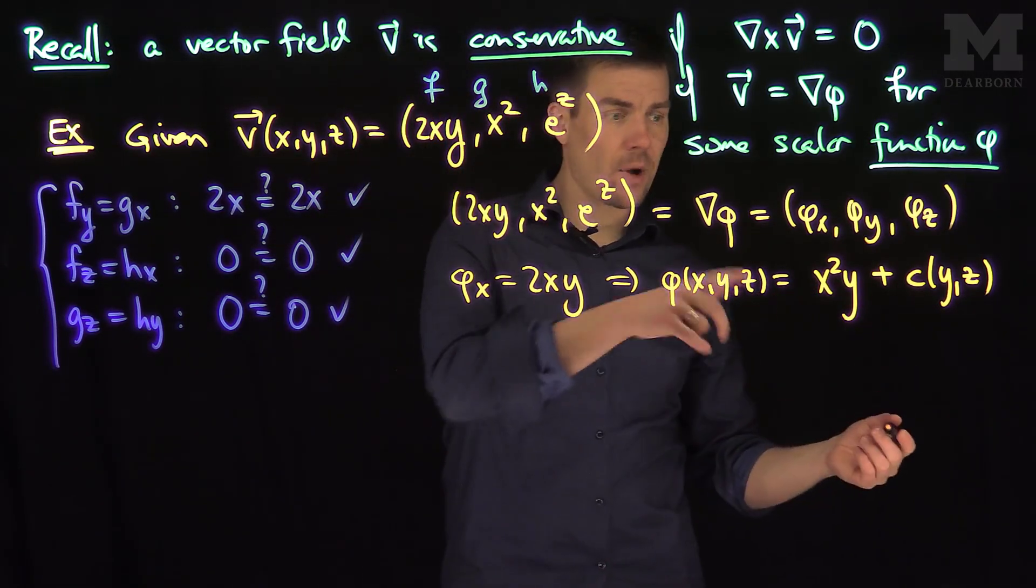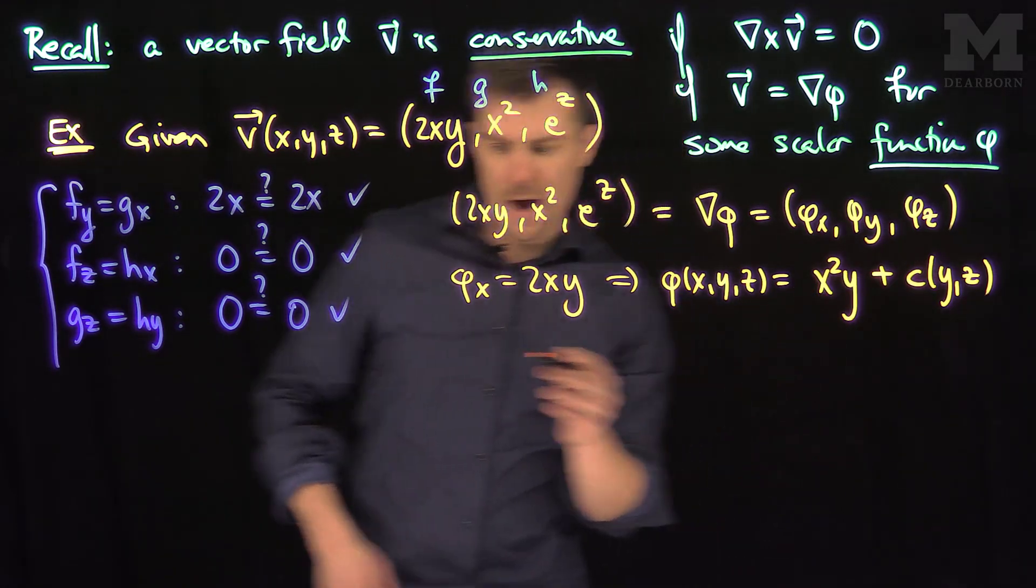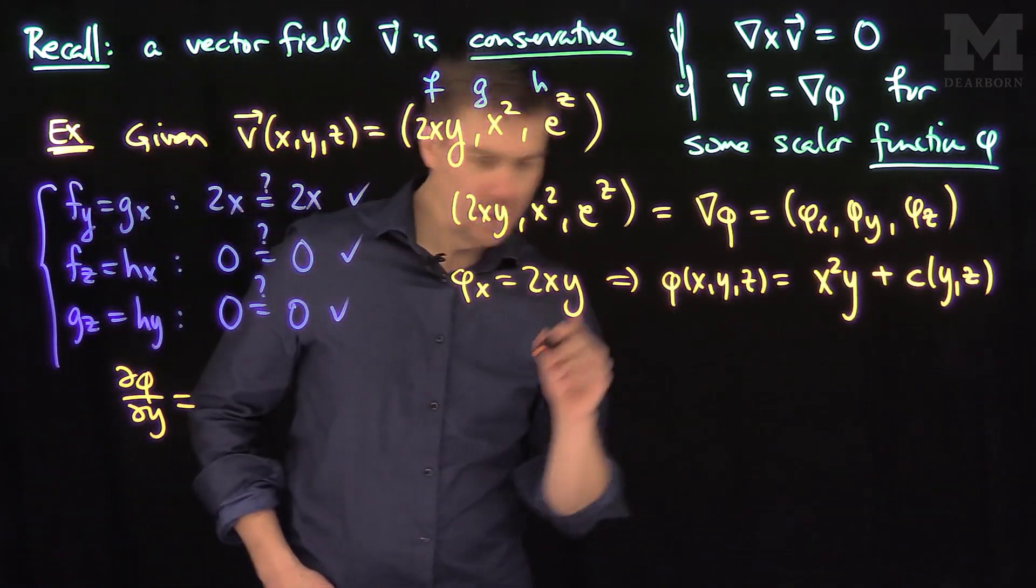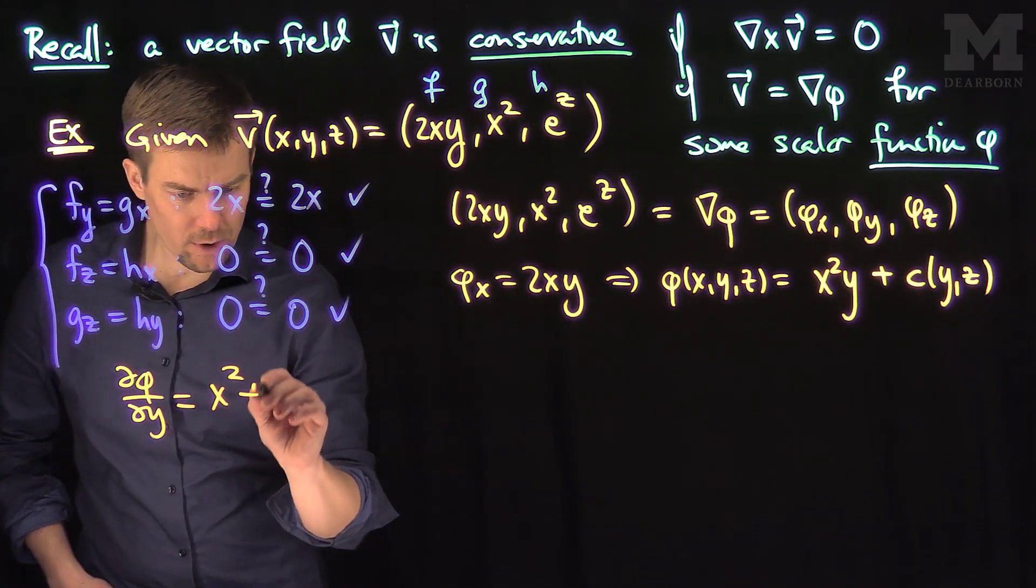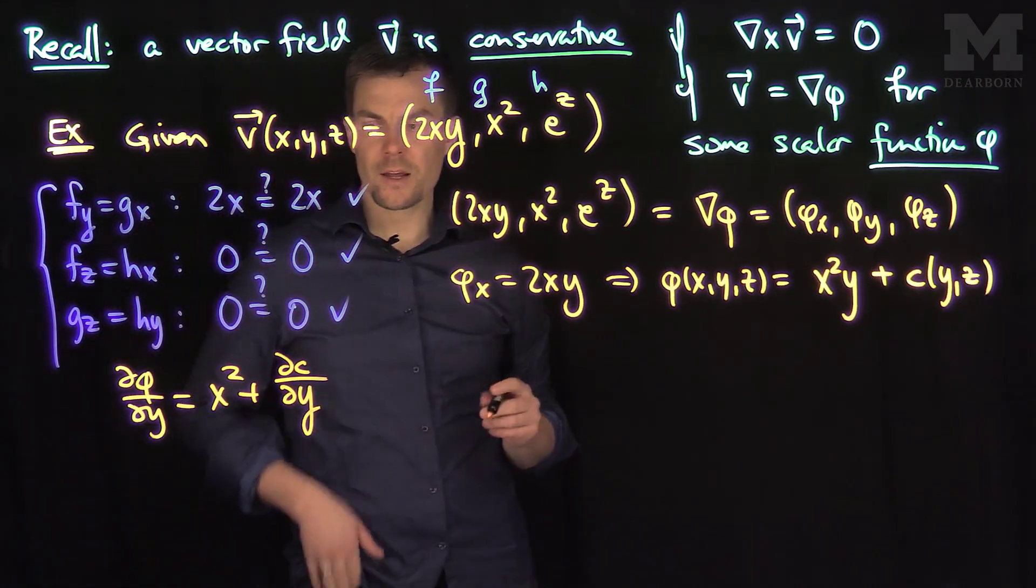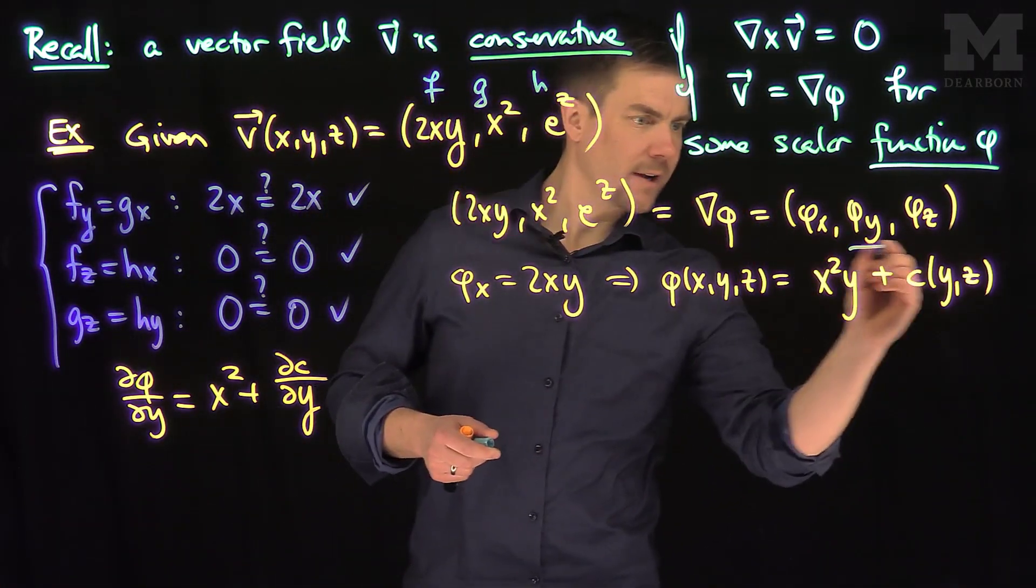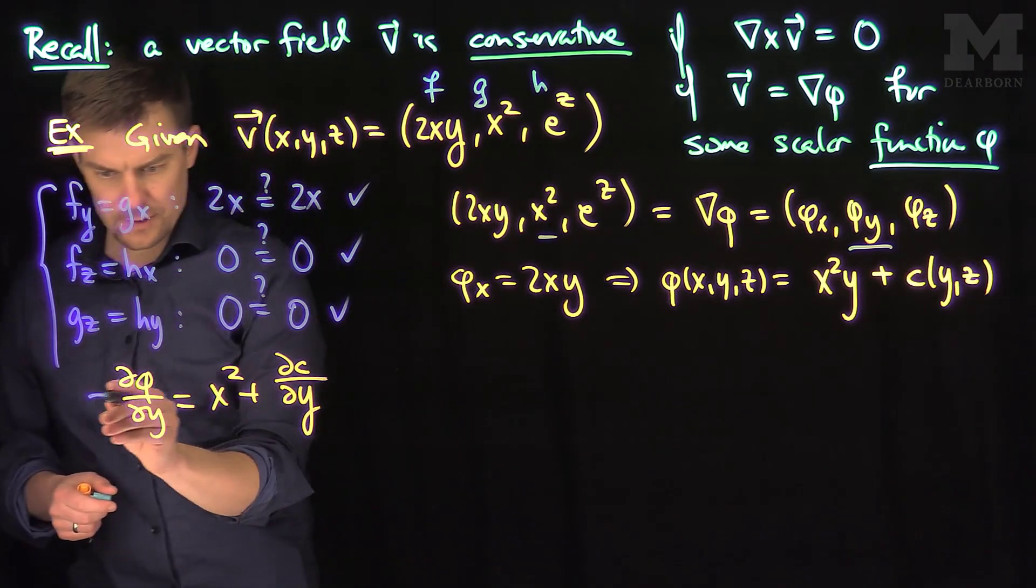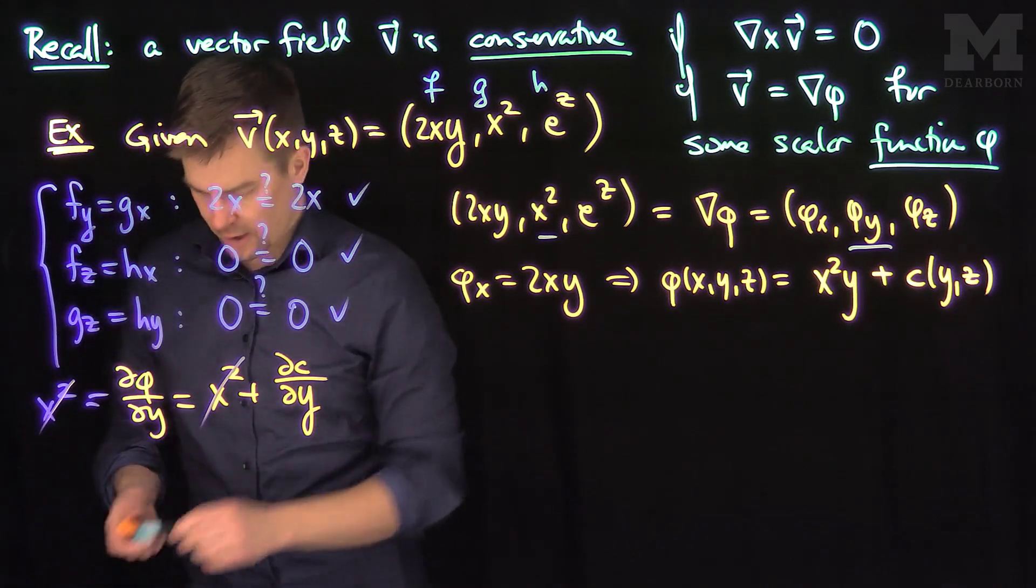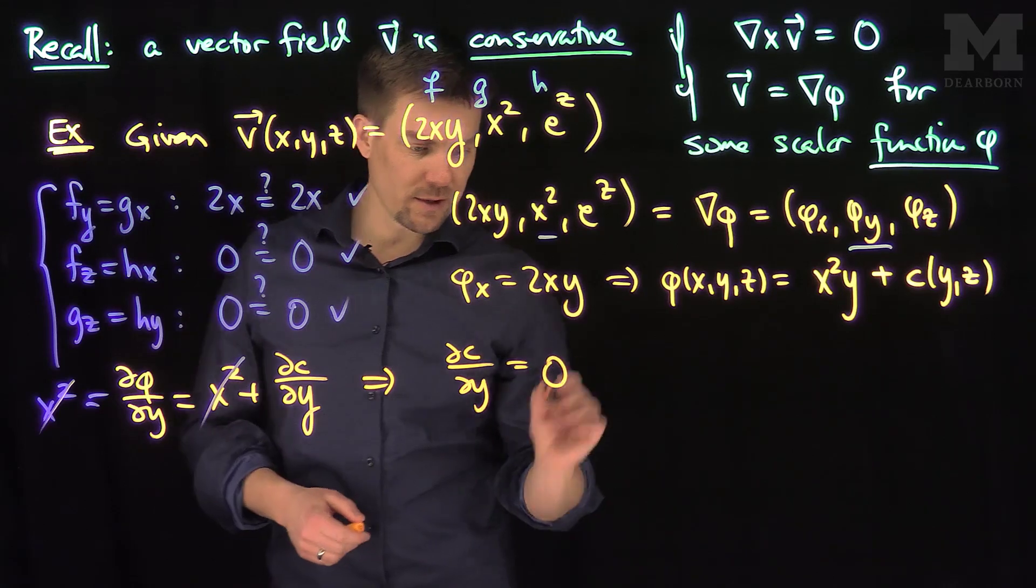So what we can do now is we can say, well, how can I find this C of Y and Z? Let me take the derivative of phi with respect to Y. So the derivative of phi with respect to Y will be X squared plus partial C partial Y. Now we know what phi sub Y is. Phi sub Y, according to our equation, is X squared. Now there's an X squared on both sides of the equation, so they will cancel out. And our conclusion, therefore, is that partial C partial Y is equal to 0.